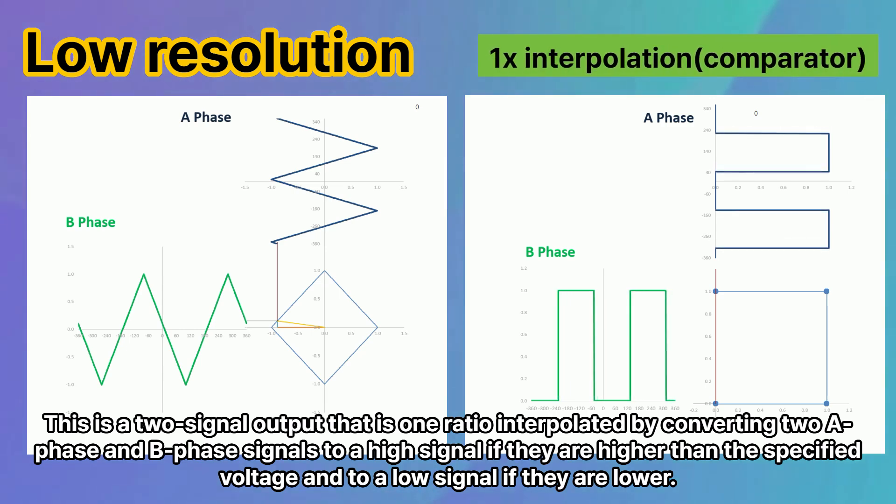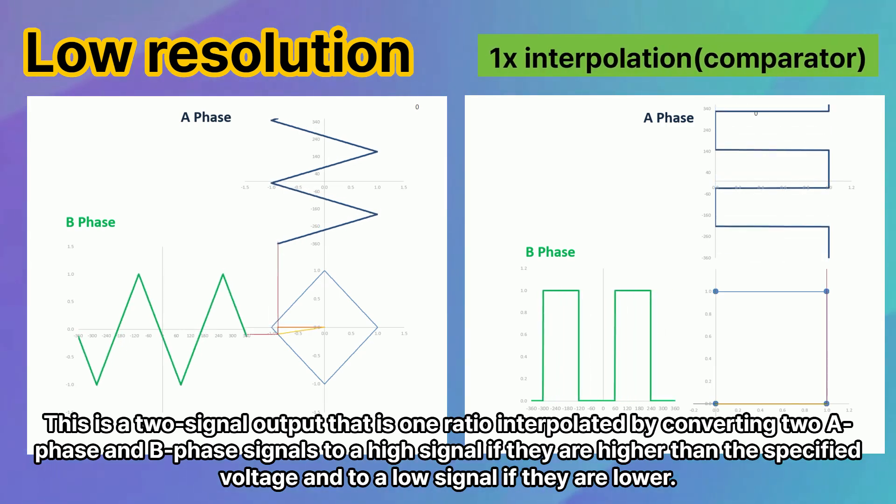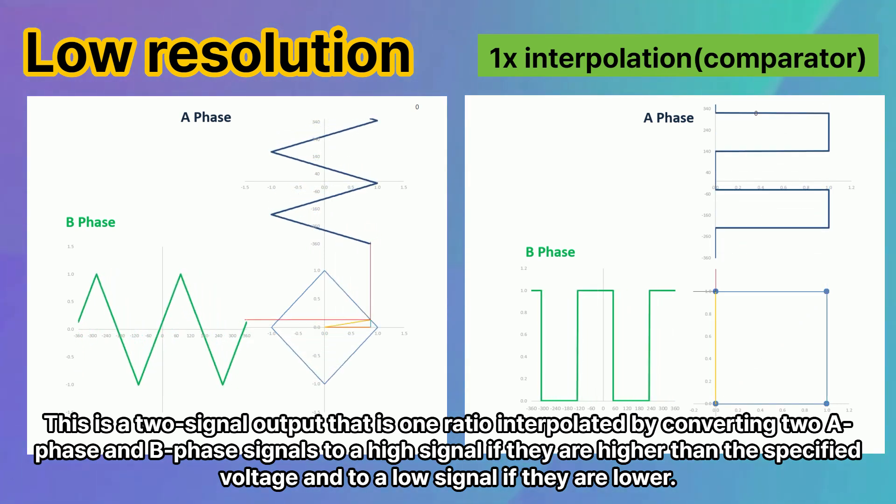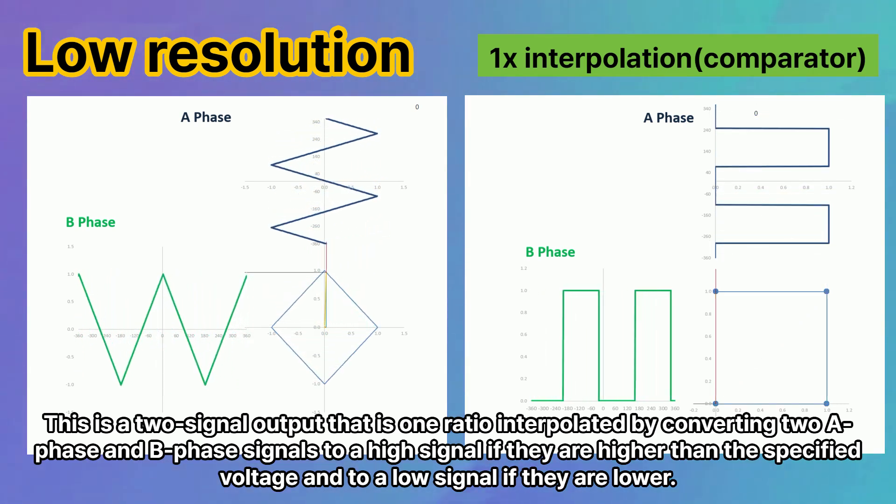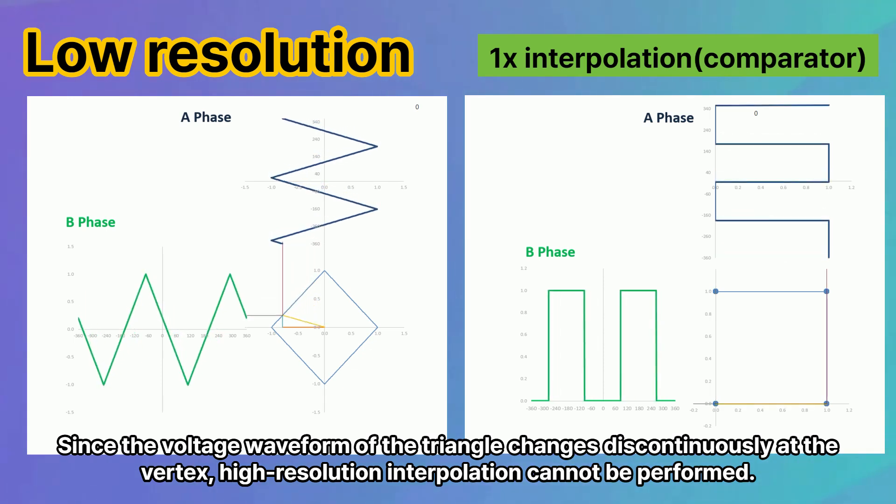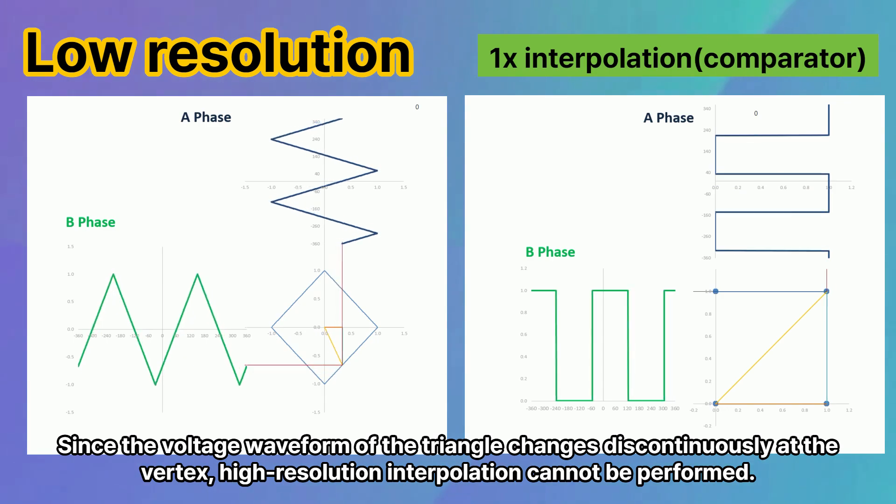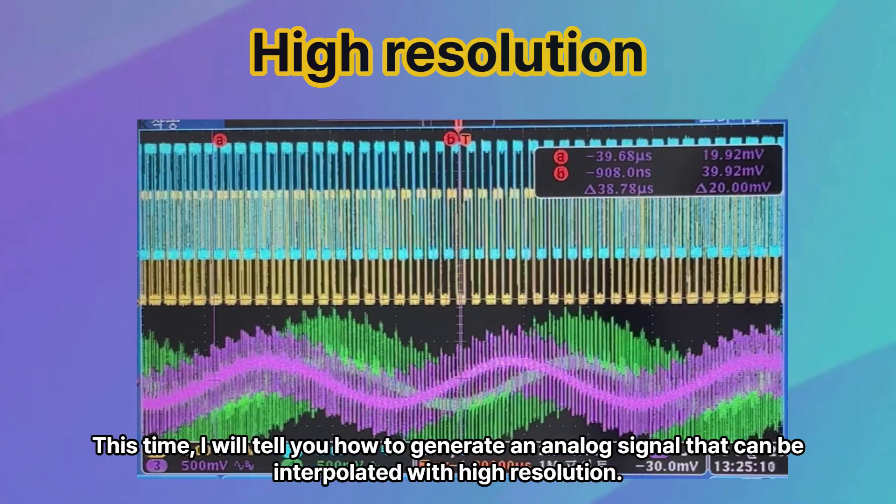This is a two-signal output that is one-times interpolated by converting two A phase and B phase signals to a high signal if they are higher than the specified voltage and to a low signal if they are lower. Since the voltage waveform of the triangle changes discontinuously at the vertex, high-resolution interpolation cannot be performed.